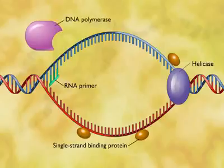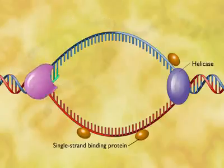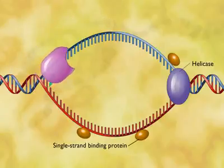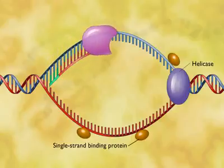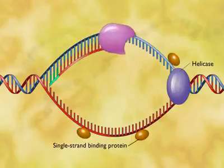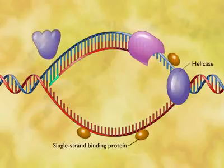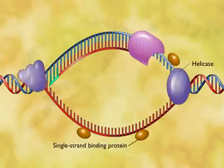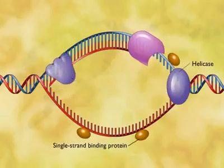DNA polymerase is then able to add DNA nucleotides to the RNA primer and thus begin the process of constructing a new complementary strand of DNA. Later, the RNA primer is enzymatically removed and replaced with an appropriate sequence of DNA nucleotides.